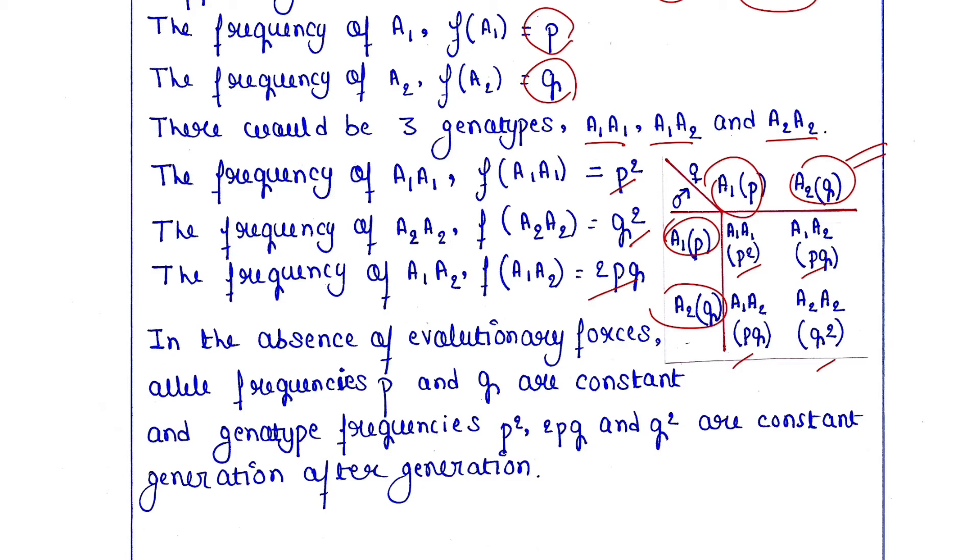In the absence of evolutionary forces, allele frequencies P and Q are constant, and genotype frequencies P², 2PQ, and Q² are also constant generation after generation. That is all about the Hardy-Weinberg Principle.